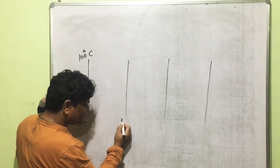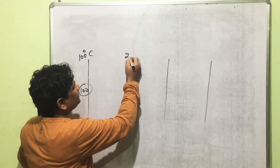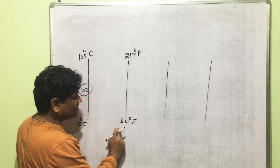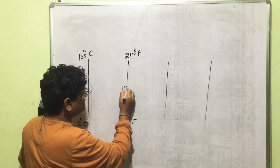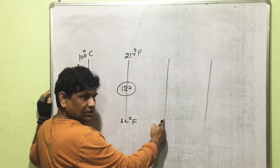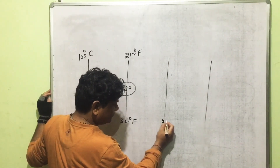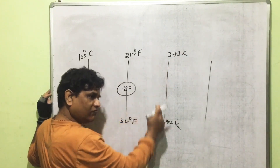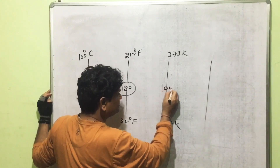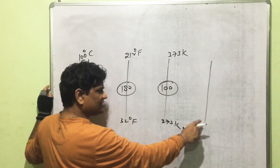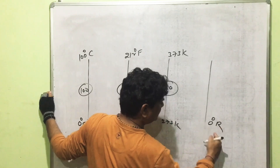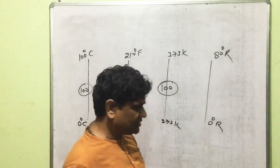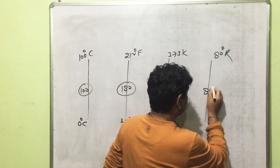For the Fahrenheit scale: lower fixed point is 32°F, upper fixed point is 212°F, fundamental interval is 180°F, and total number of divisions is also 180. For the Kelvin scale: lower fixed point is 273 K, upper fixed point is 373 K, fundamental interval is 100, and total divisions is 100. For the Réaumur scale: lower fixed point is 0°R, upper fixed point is 80°R, fundamental interval is 80, and total divisions is 80.